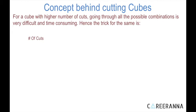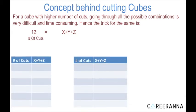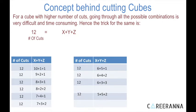For a cube with a higher number of cuts, going through all possible combinations is very difficult and time-consuming. The trick is: if you have been given the number of cuts — let's say 12 — just try to break 12 in the form of x plus y plus z. Make a table and try all combinations: 10+1+1, 9+2+1, 8+3+1, 8+2+2, 7+4+1, 7+3+2, and so on till 5+5+2, 5+4+3, and 4+4+4. Look for that combination where the values of x, y, and z are as close to each other as possible.